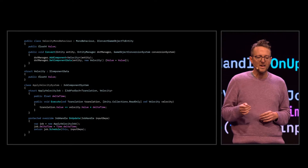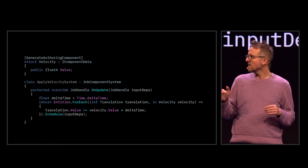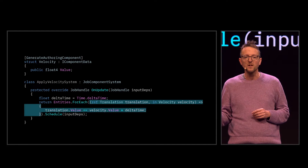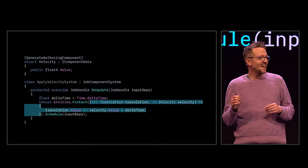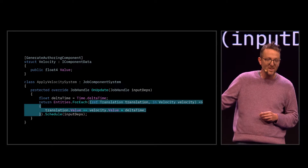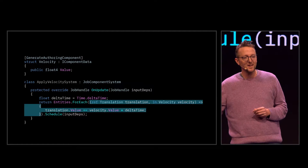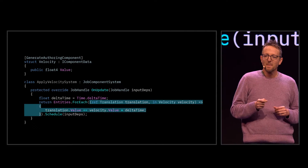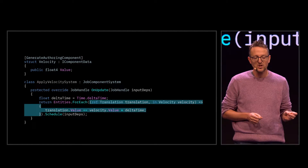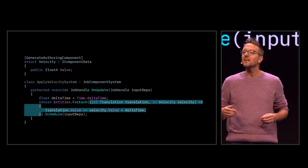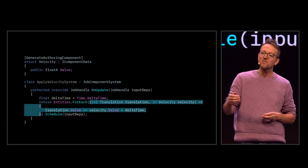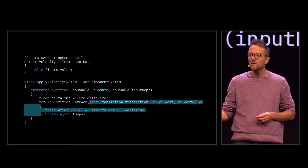Now let's take a look at this new code. The programmers in the room might have had a little heart attack because there's a lambda expression in here. And those cause GC allocations, and those cause GC spikes, and those cause complaining customers. In the next DOTS release, we're making the lambda expression in the entities.forEach special — instead of running it as normal C#, we convert it into that same job struct that we were asking you to write manually before.